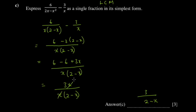To recap: we had to find the lowest common multiple, or common denominator - they are the same thing. The way to do it is to factorize the denominators, which exposes the factors. When finding the LCM, we don't repeat any factors. That's why we didn't repeat x - it was already represented.